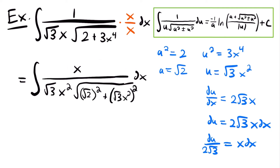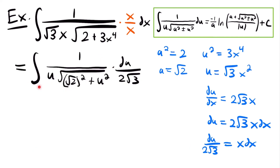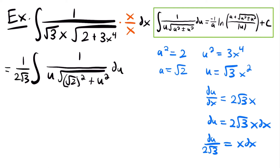And so now we can rewrite this integral in terms of u, and so we'll have that it is equal to the integral of 1 divided by u times the square root of (√2) squared plus u squared, times du divided by 2 times the square root of 3. We replaced the square root of 3 times x squared here and here with u, because that's what we set u equal to, and we replaced x times dx with du divided by 2 times the square root of 3. And so now if we clean up our work here, we can rewrite this integral by pulling the constant multiple of 1 divided by 2 times the square root of 3 out to the front of the integral, leaving just du inside. And so now this integral matches up with the integral in our integration rule, so we can integrate it into that natural log function.